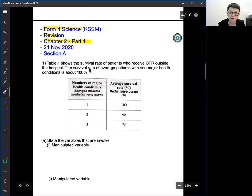Table 1 shows the survival rate of patients who receive CPR outside the hospital. The survival rate of average patient with one major health condition is about 100%. Number of major health condition 1, survival means 100% survive. Number 2, it's 90 and number 3 is 75.